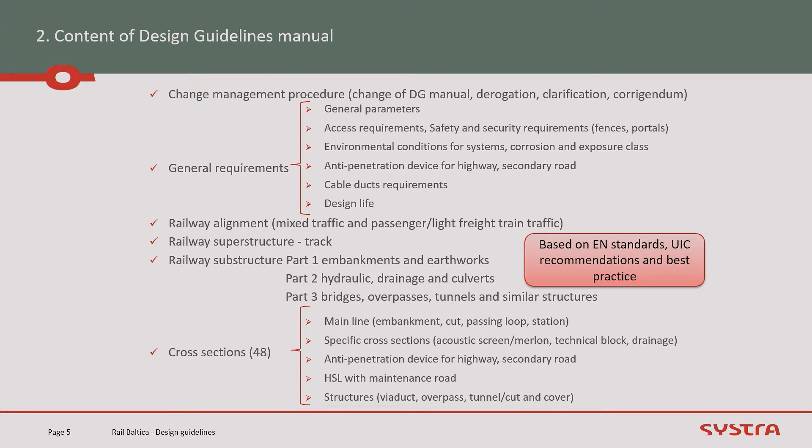We have clarification and correction if required. A key term is the general requirement, which sets out the key requirements that shall be applied for everything. We have general parameters — very general but also very necessary — to provide a background and the same basis for everyone. We have access requirements, safety and security requirements, and for the systems, we have set out the environmental conditions to be considered. We also have corrosion exposure class and anti-penetration devices for when a road is close to the high-speed line.